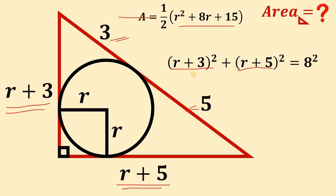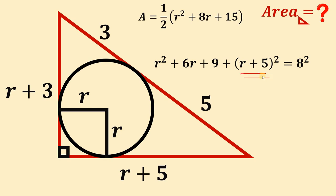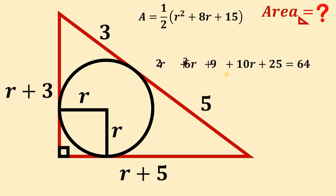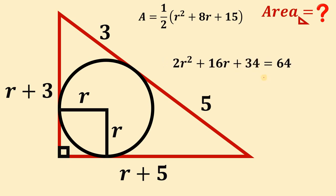Let's expand. (R plus 3) squared gives R squared plus 6R plus 9. (R plus 5) squared gives R squared plus 10R plus 25. And 8 squared equals 64. Combining like terms: R squared plus R squared gives 2R squared; 6R plus 10R gives 16R; and 9 plus 25 gives 34. So we have 2R squared plus 16R plus 34 equals 64.